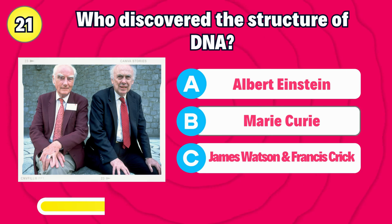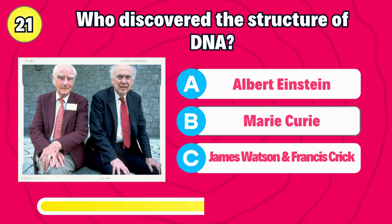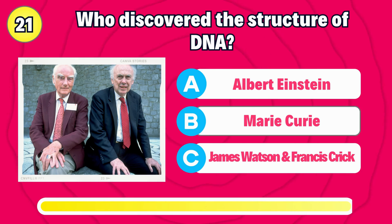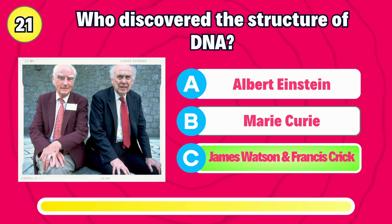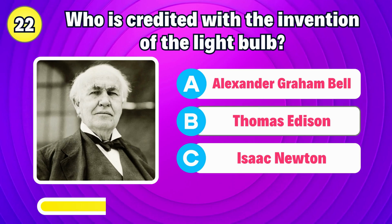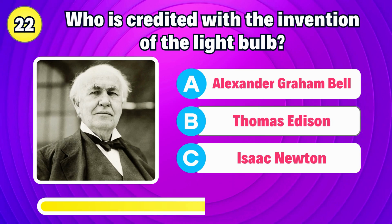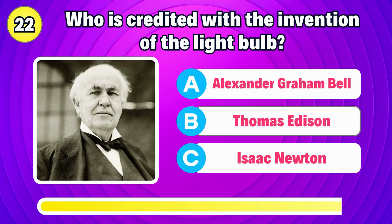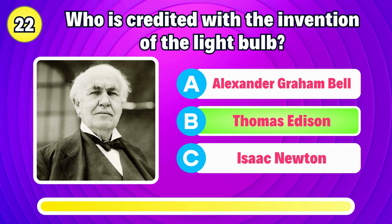Who discovered the structure of DNA? Right, it's James Watson and Francis Crick. Who invented the electric light bulb? Right, it's Thomas Edison.